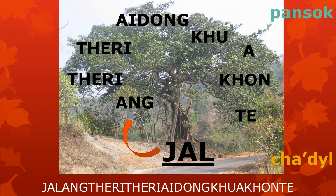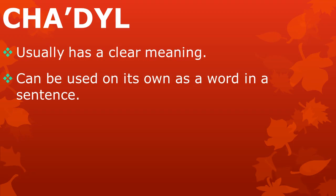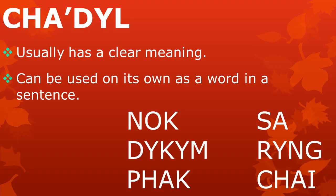The word 'jalang tiri-tiri-yadongkhuwa konte' — the root is 'jal', and all the other meaningful parts are pansok. Tzadl, or roots in English, have a clear meaning and can often be used on their own as words in a sentence. Examples of tzadl are: nok, dekem, pak, sa, ra.